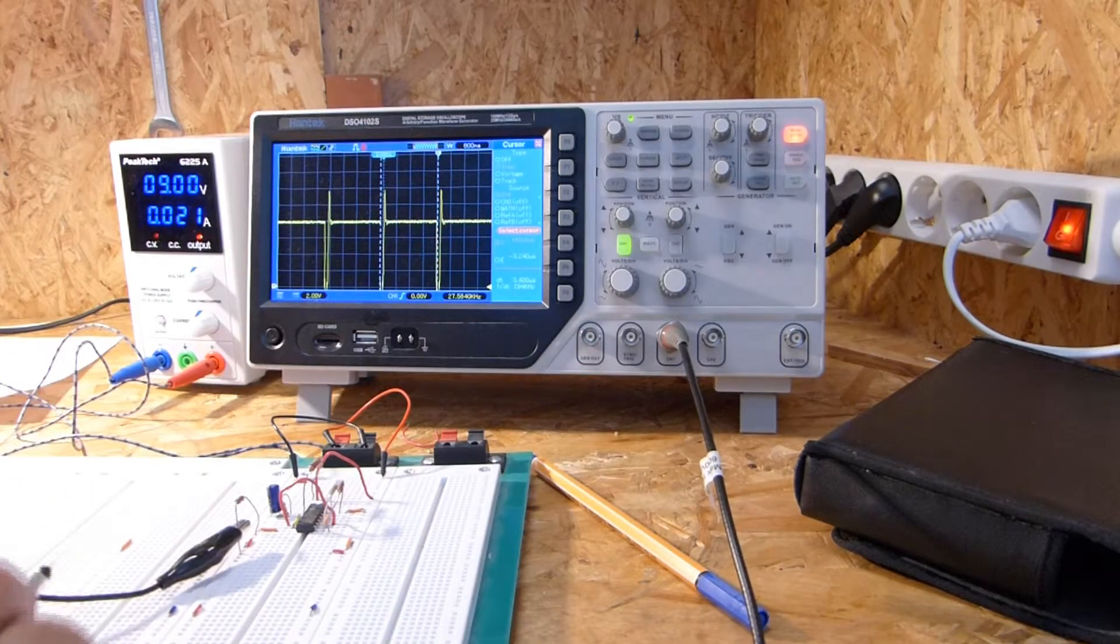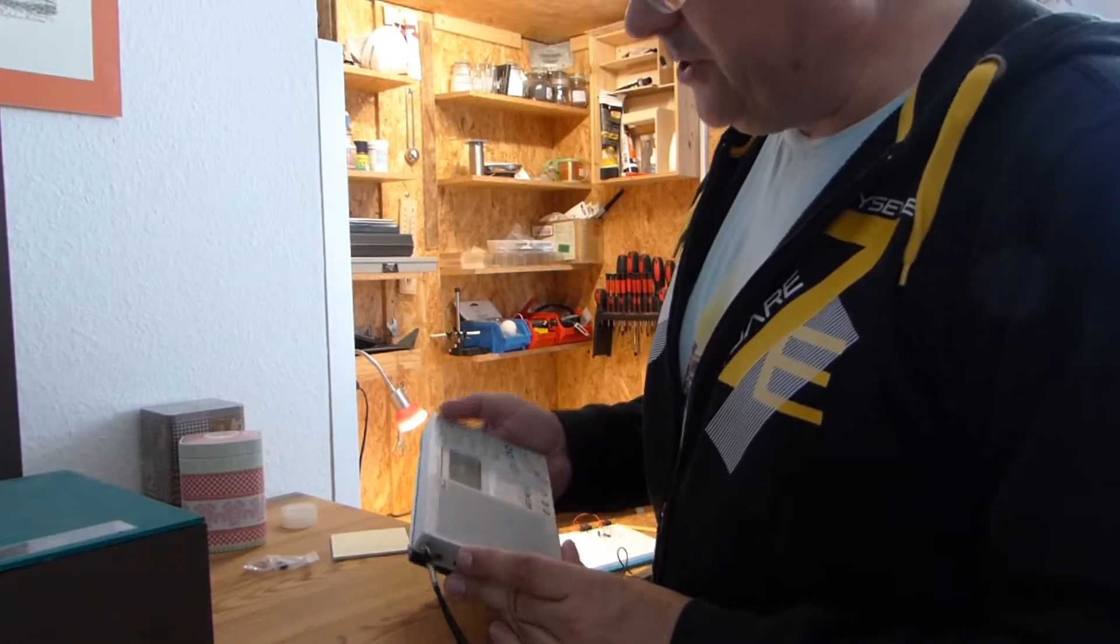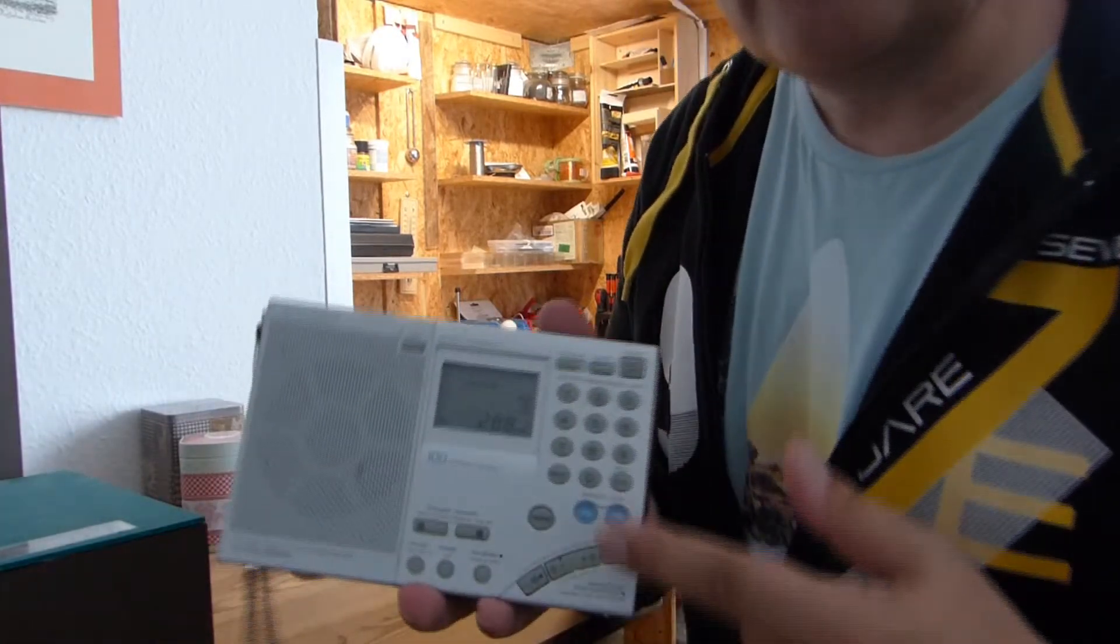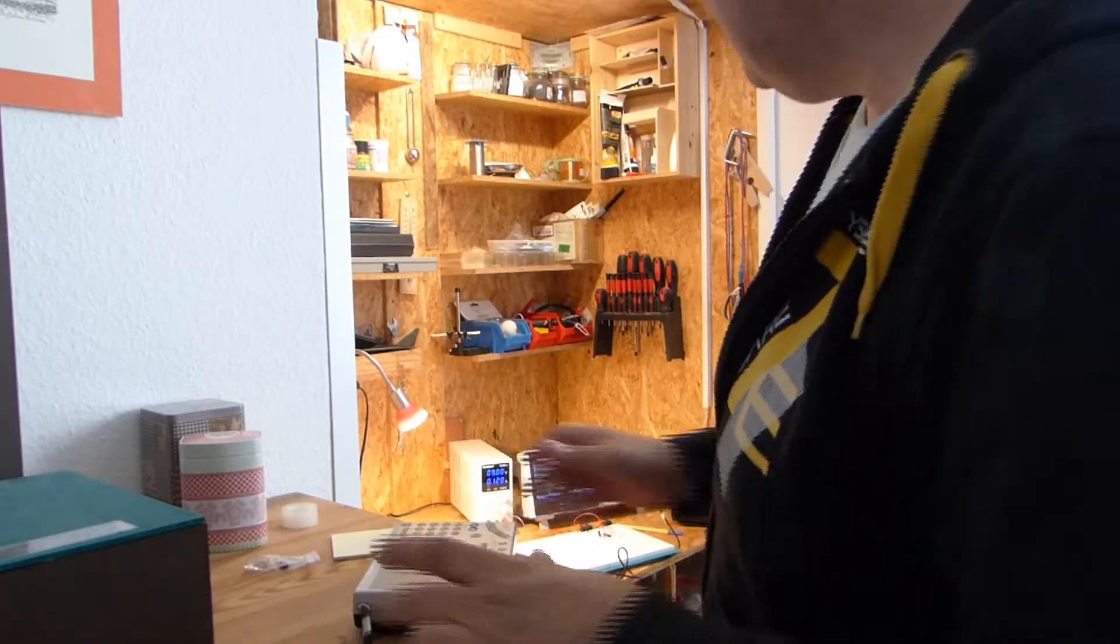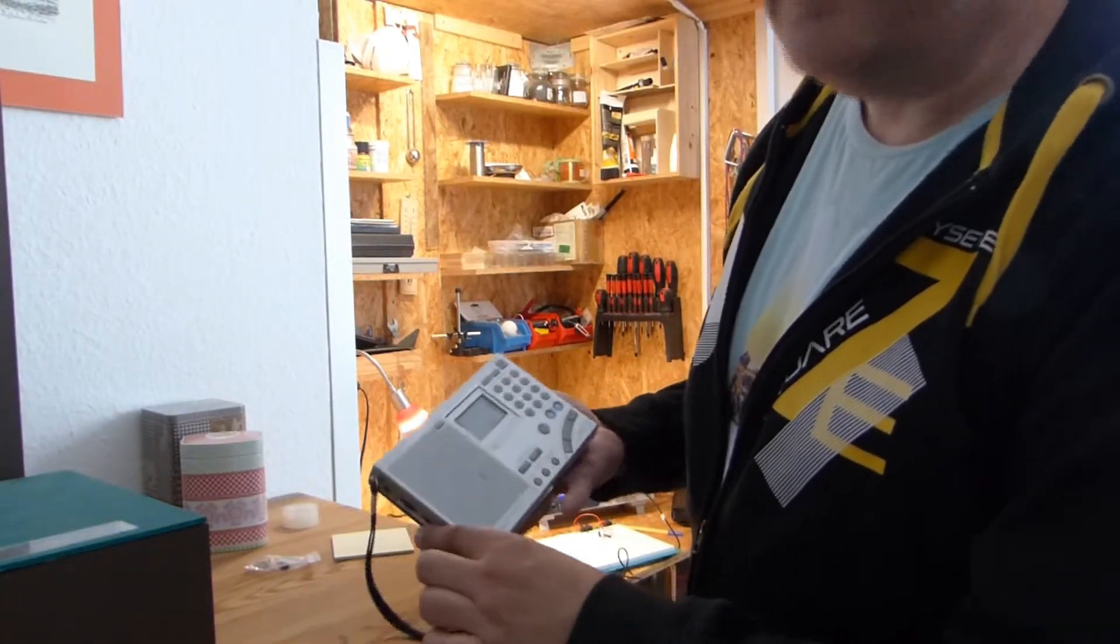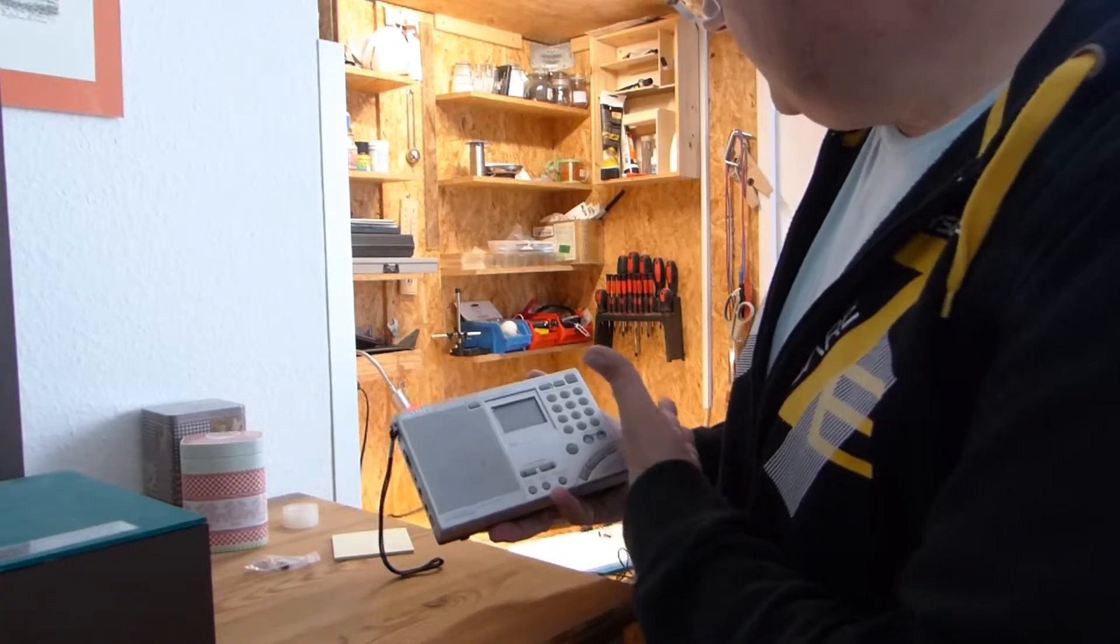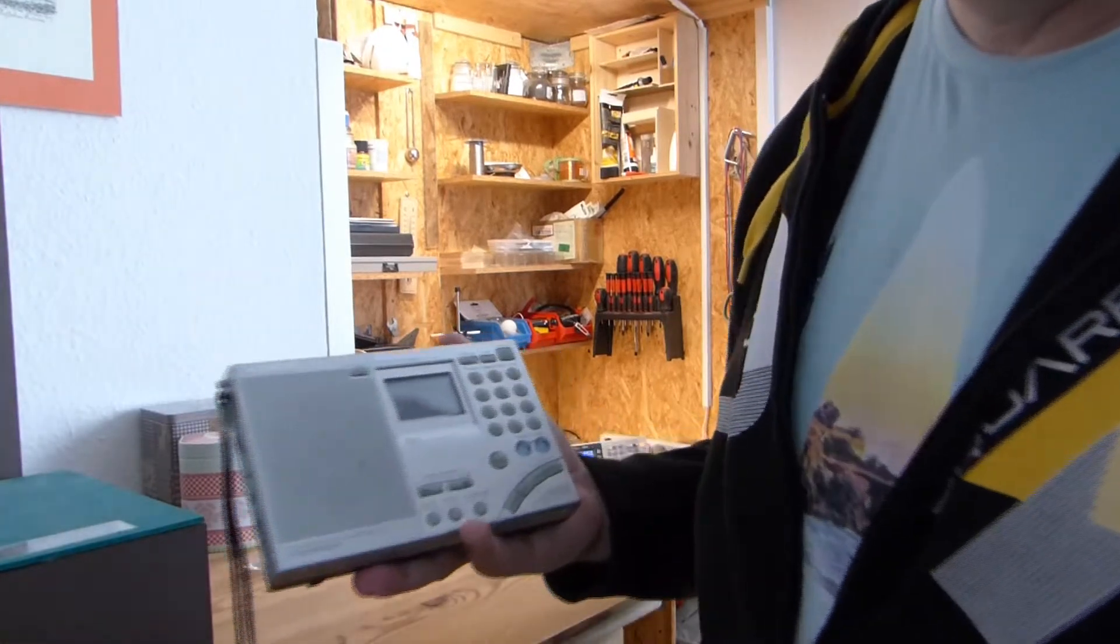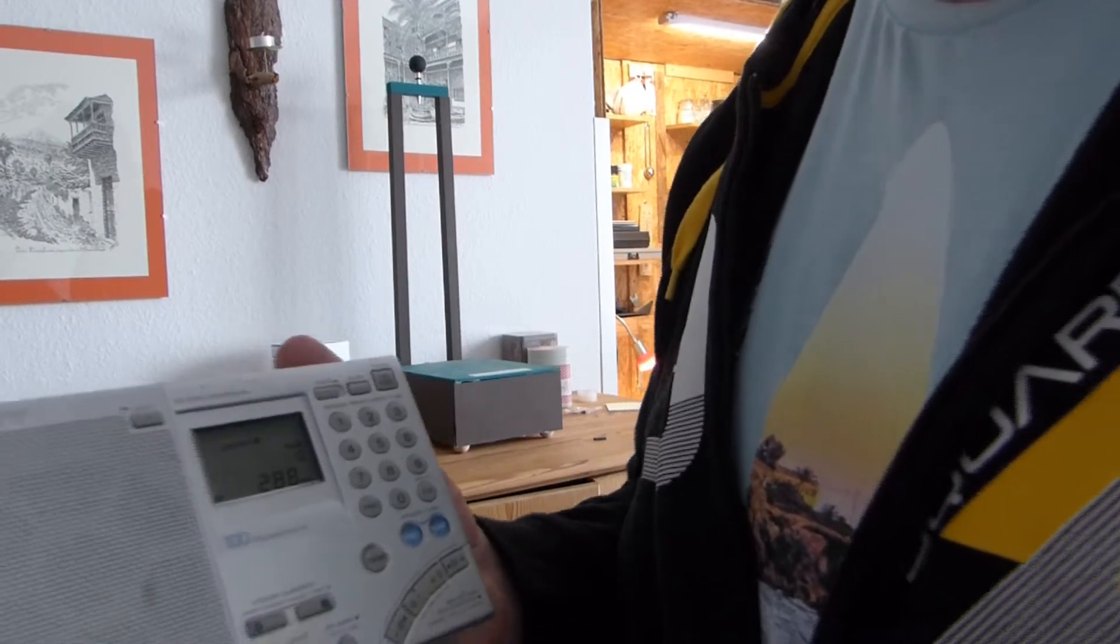And now let's hear how it sounds. So now we switch on the Sony receiver. We have a frequency of 288 kilohertz. Now I'll switch on the transmitter. You can hear the signal. It doesn't bridge very much distance. Now we have a distance about one meter when we go away. Let's take the camera a bit.